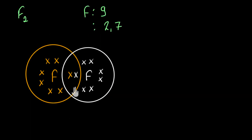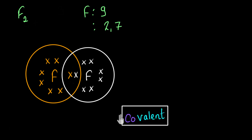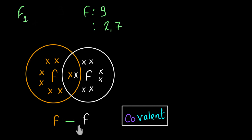Something similar is happening with the fluorine molecule. The fluorine atoms had seven electrons and needed one more to be stable. To gain one, each had to share one electron with the other - that's how they became stable. If they want to be stable forever, they will have to keep sticking to each other and sharing one electron each. This is how a chemical bond is formed between these two fluorine atoms. Since this bond is formed because of sharing of electrons, we call it a covalent bond. 'Co' refers to sharing and 'valent' refers to valence electrons. To represent a covalent bond simply, we draw a dash between the two sharing atoms - one single dash refers to a pair of electrons being shared. This is called a single covalent bond.